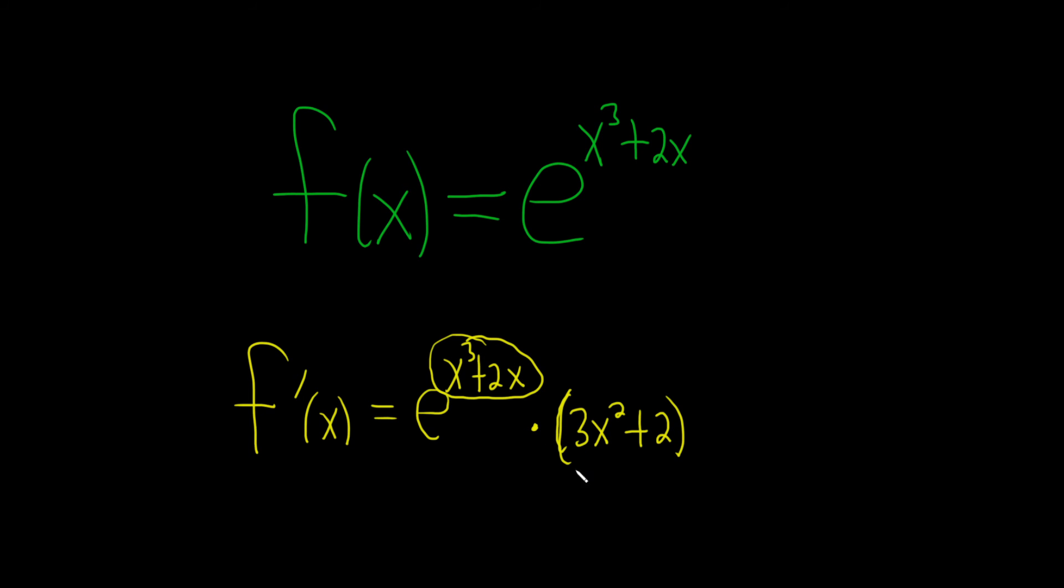As a last step, we can maybe take this and put it in the front. So this is equal to 3x squared plus 2 times e to the x cubed plus 2x. And that would be the final answer.